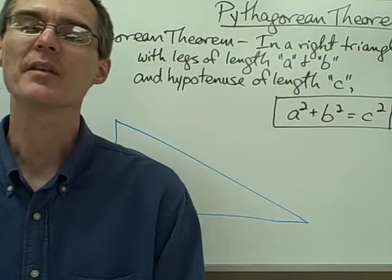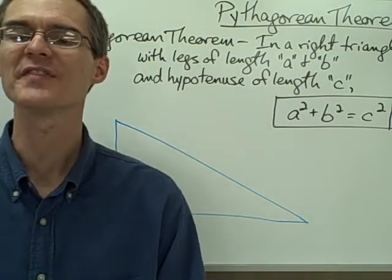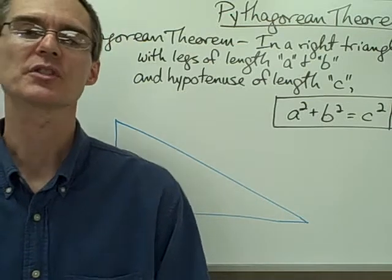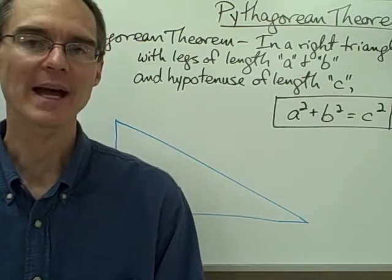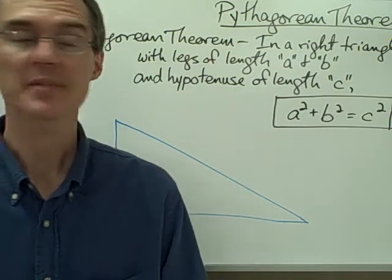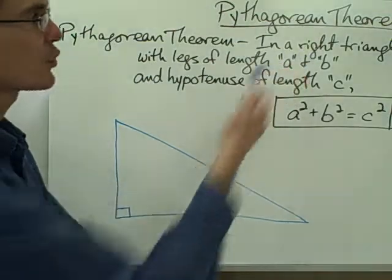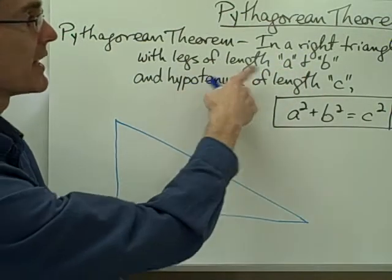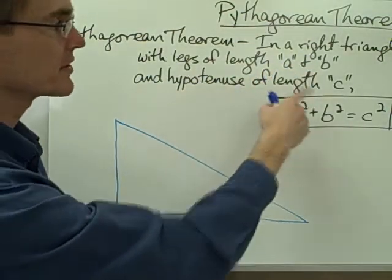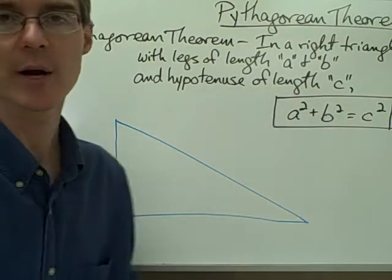In this video, we're going to talk about the Pythagorean Theorem, probably one of the most famous theorems in all of mathematics. It was discovered several thousand years ago by a Greek mathematician named Pythagoras. The Pythagorean Theorem says that in a right triangle with legs of length A and B, and hypotenuse of length C, A squared plus B squared equals C squared.